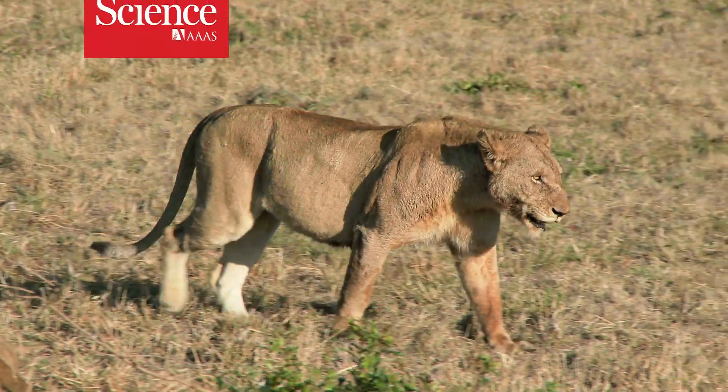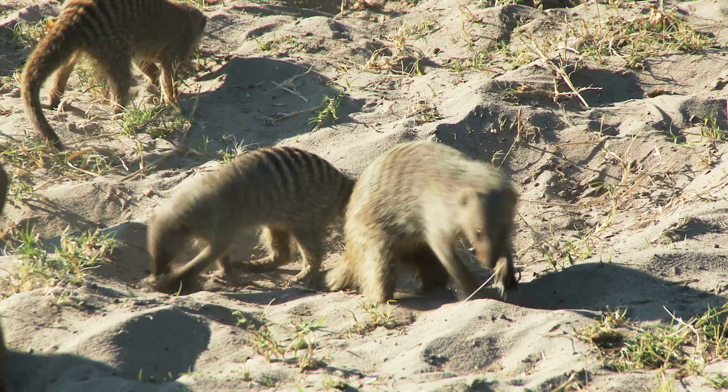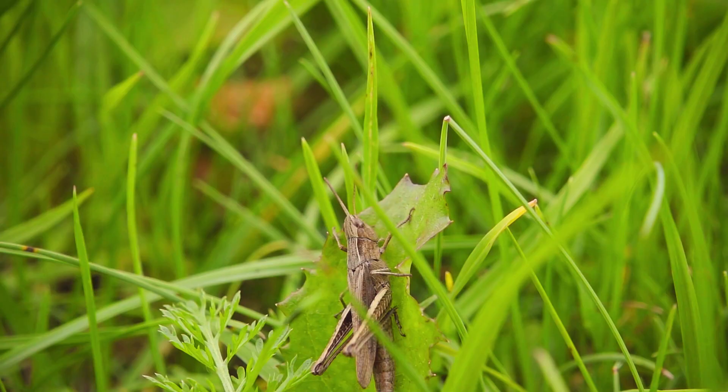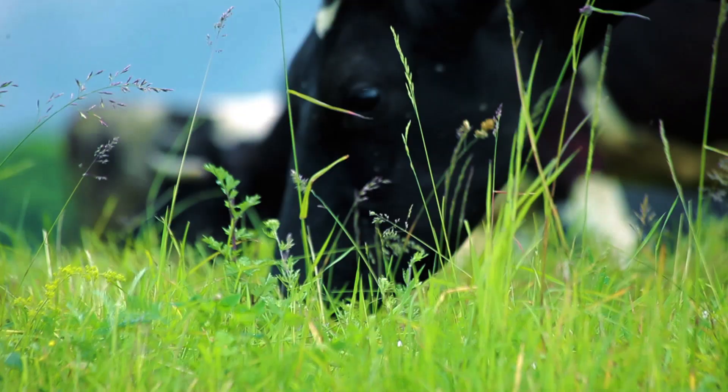In the wild, animals affect each other's behavior all the time. Prey species keep away from predators' turf, insects jump away from browsing herbivores. They may not be communicating per se, but they shape each other's environment.